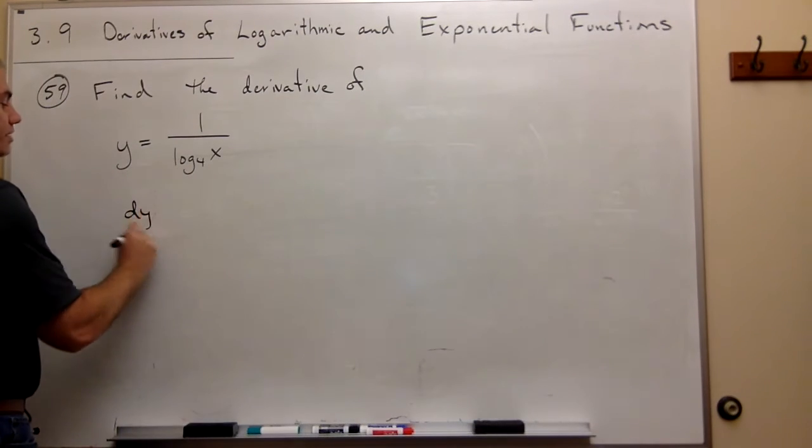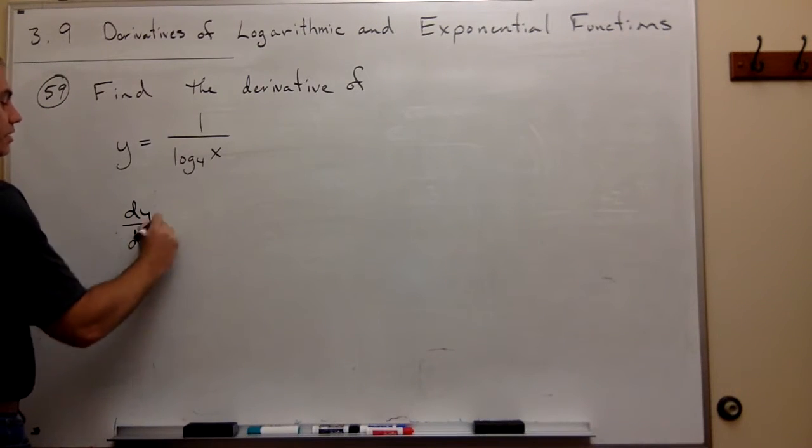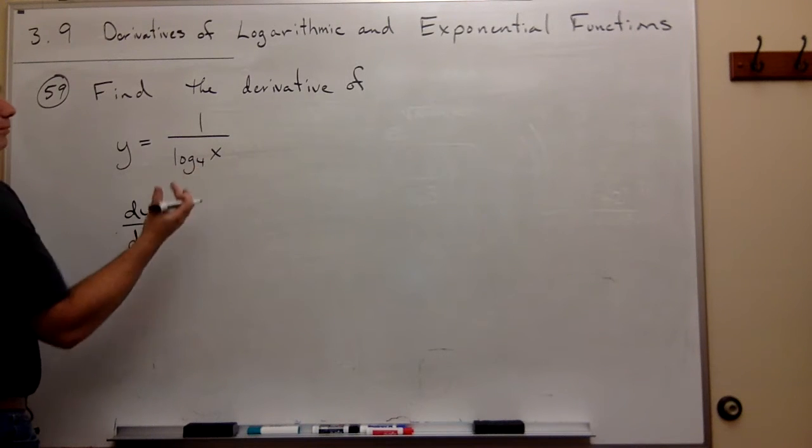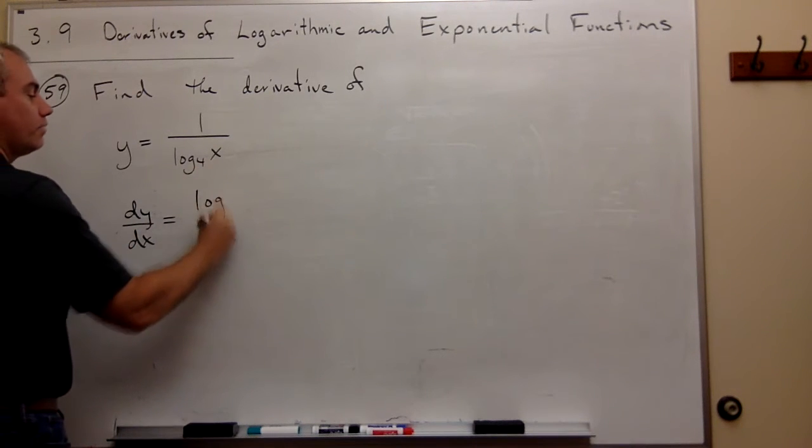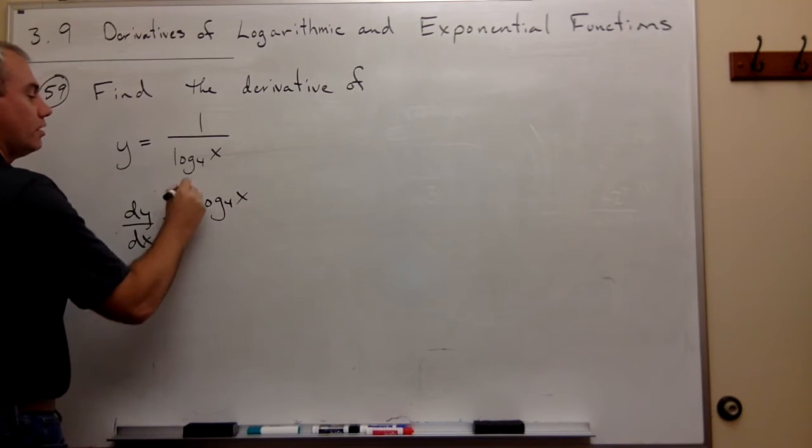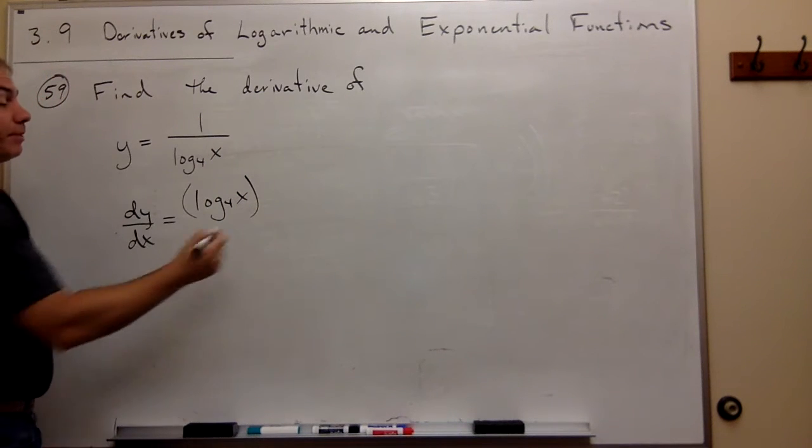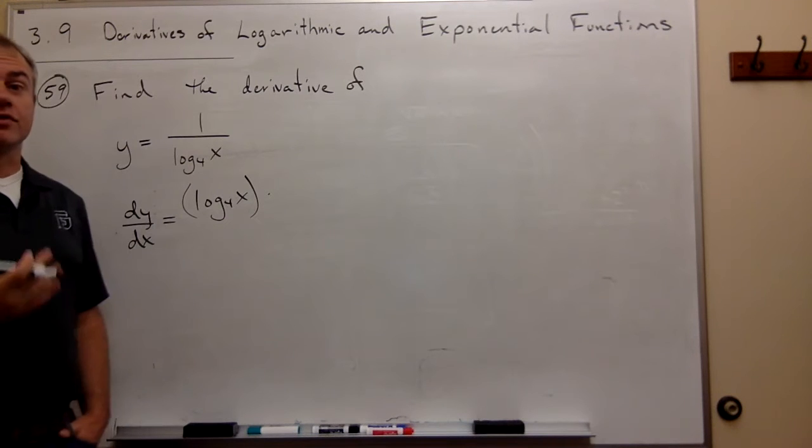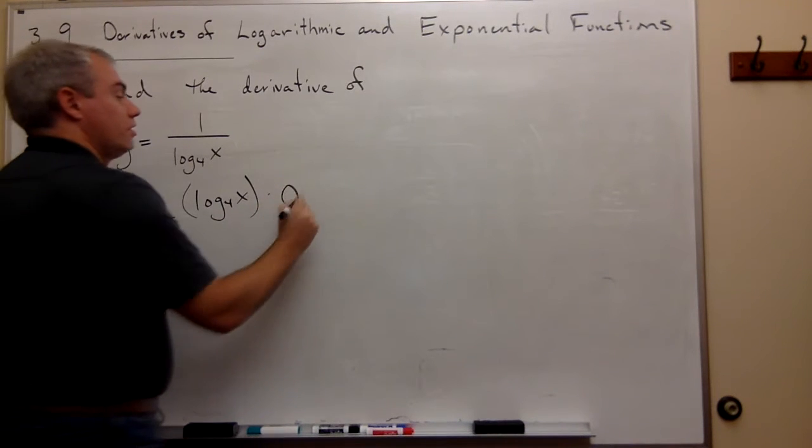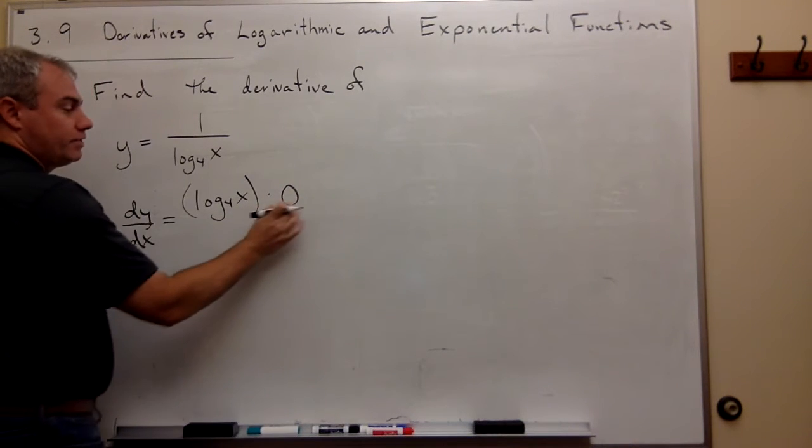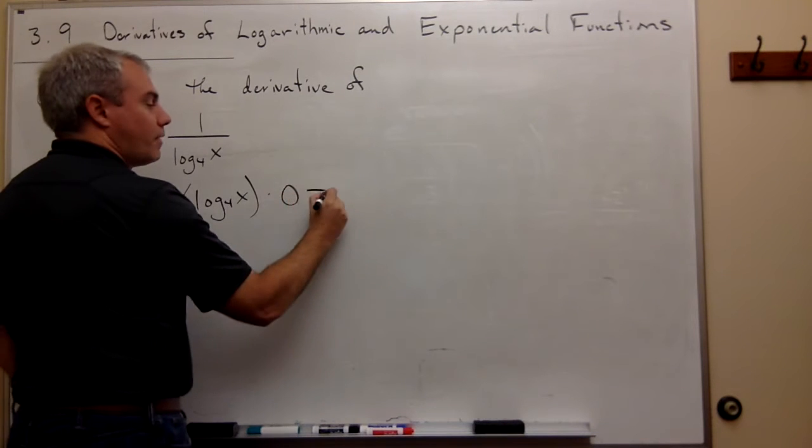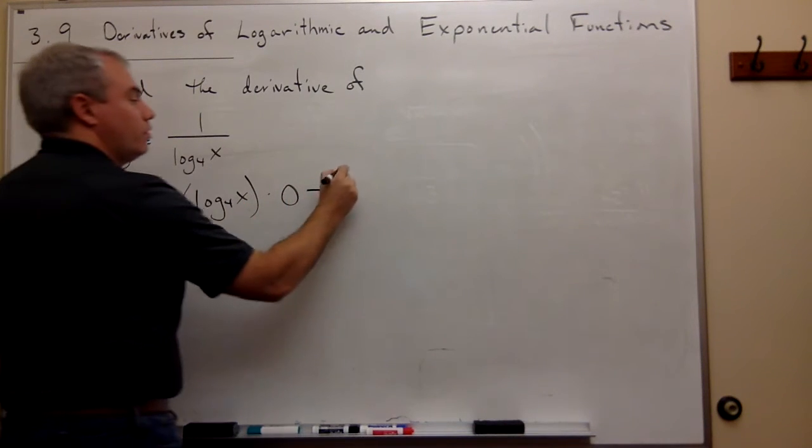If I write this as dy/dx, this is going to be the bottom left alone, log base 4 of x, times the derivative of what's on top. But the top is just 1 whose derivative is 0. So I have the bottom times the derivative of the top minus the top, which is 1,